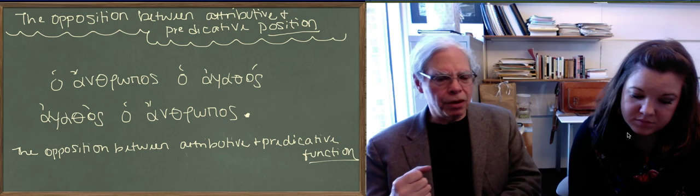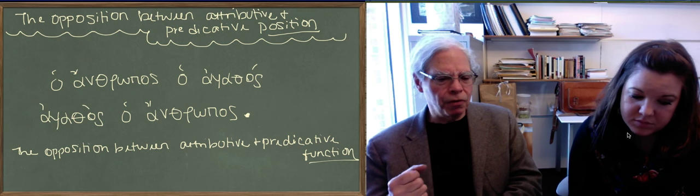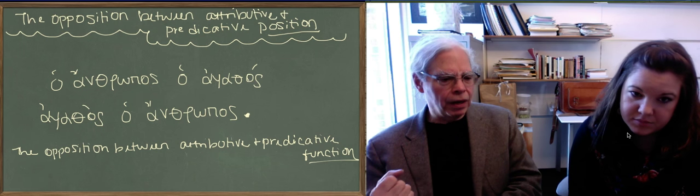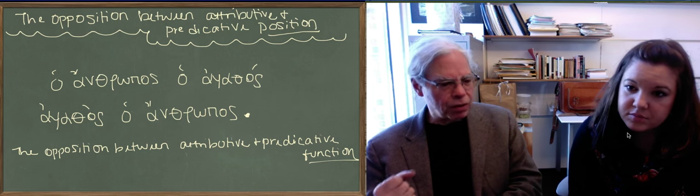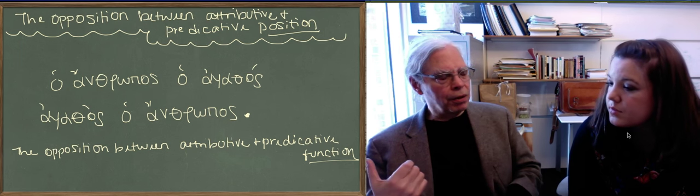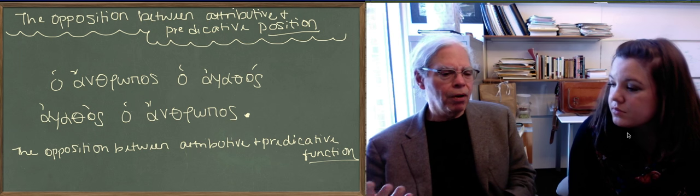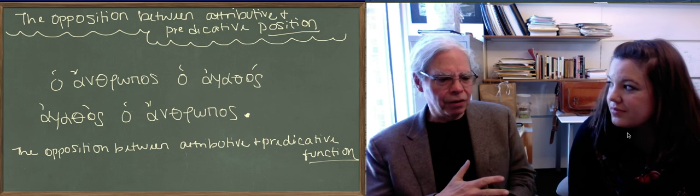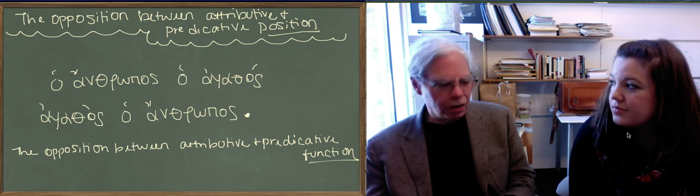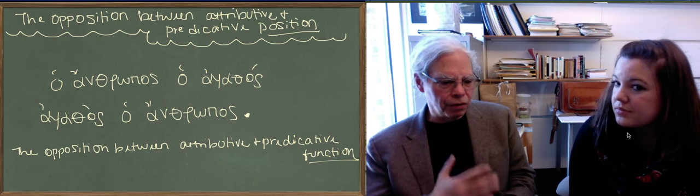The notion is, the function of attributive position is to specify that a given modifier goes with that noun, is an attribute or specifying an attribute of that noun. The concept of attribute I don't think is clear until you think about what is the opposite of it. And so we want to also talk about what's the opposite of attributive position and also what's the opposite of attributive function.